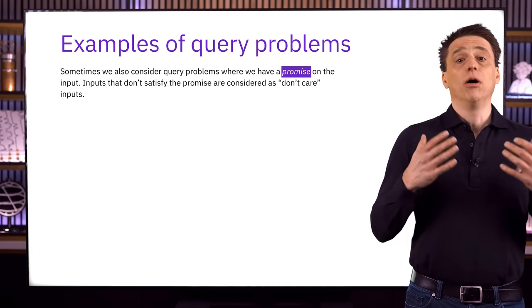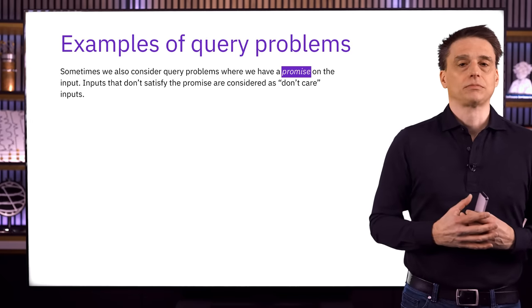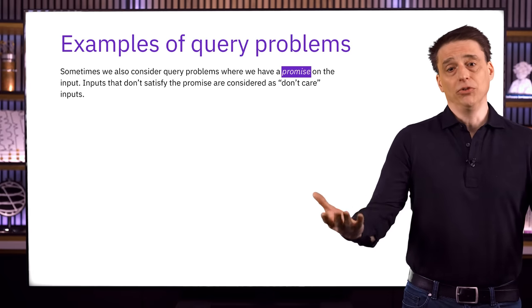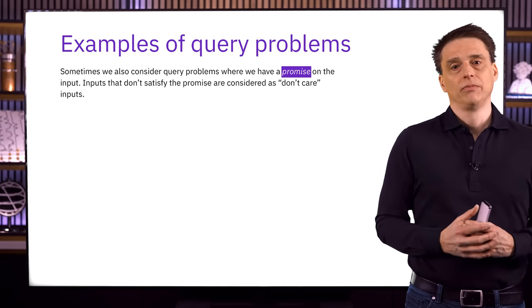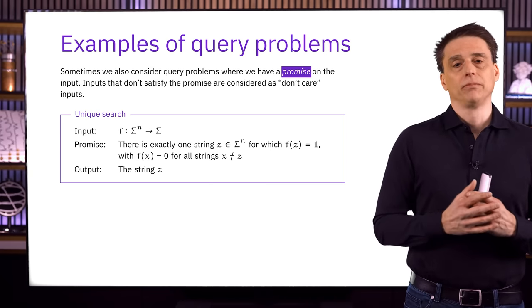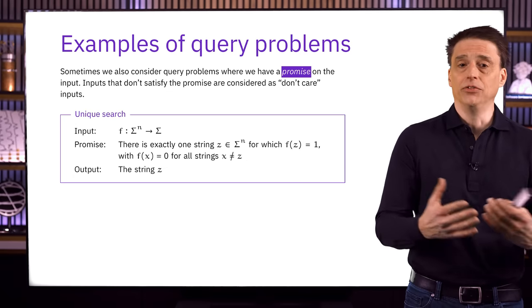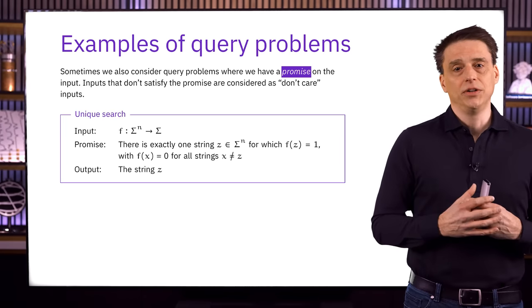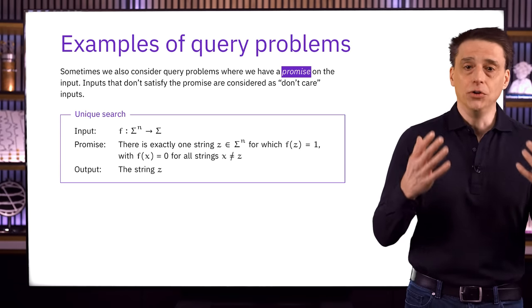Sometimes we consider query problems with a promise on the input function — some sort of guarantee — and we don't worry about functions that don't meet that promise. Functions that don't satisfy the promise are considered don't-care inputs. An example is unique search: we're promised there's exactly one string z that causes f to evaluate to one, with f(x) equal to zero for every other string x. The correct output is this unique string z, and we place no requirements on algorithms when given non-promise-satisfying functions.